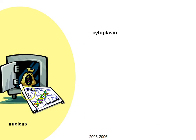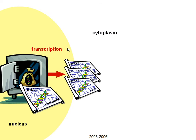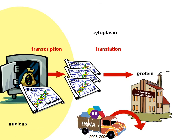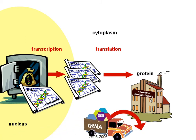Another way to think about it is that DNA is kind of the codes, the blueprints for making proteins, and they're kept in the safe. The safe is the nucleus. So if the DNA doesn't leave the nucleus, that means we have to make a copy of those codes in the process of transcription. And those copies are messenger RNA. Then messenger RNA leaves the nucleus, and using the codes, we'll be building our proteins at the protein factory — the ribosome.